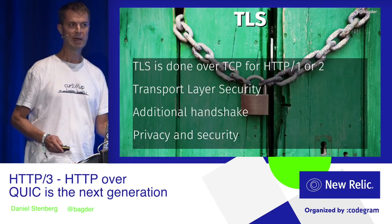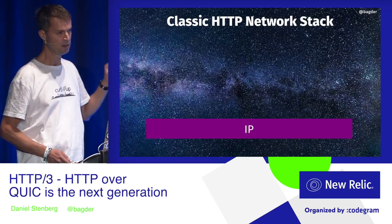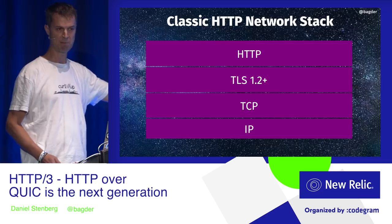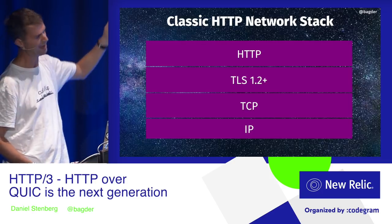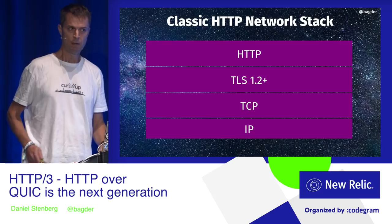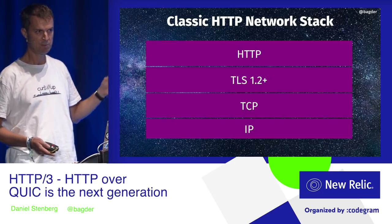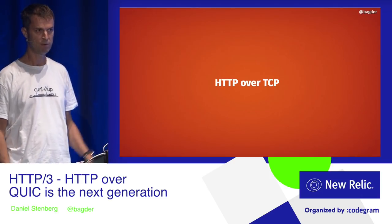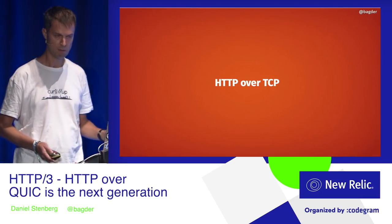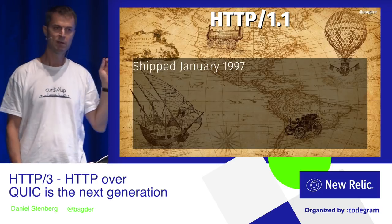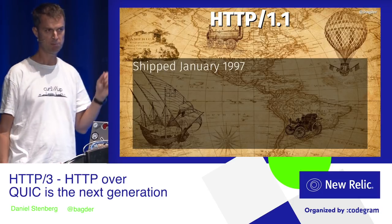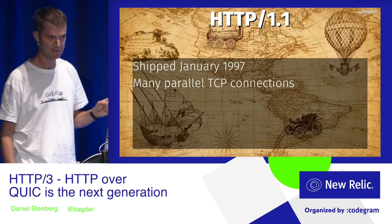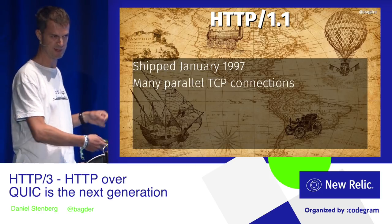So the protocol stack is: IP, TCP, TLS, and HTTP over that — that's HTTPS, because that's how it works. HTTP 1.1, the update to HTTP 1, was shipped in 1997. It's an upgrade from the previous version, fixing some of the problems with HTTP 1.0.